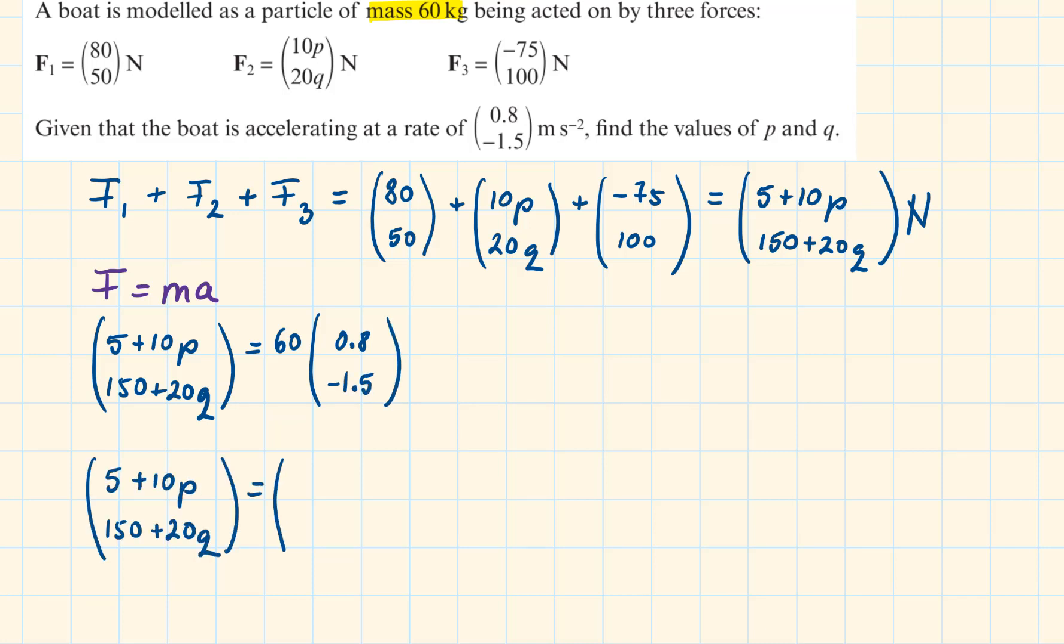Simplifying the right hand side will be 48 minus 90. Writing out an equation for the x direction will give us 5 plus 10P is equal to 48. Solving it for P is equal to 4.3.